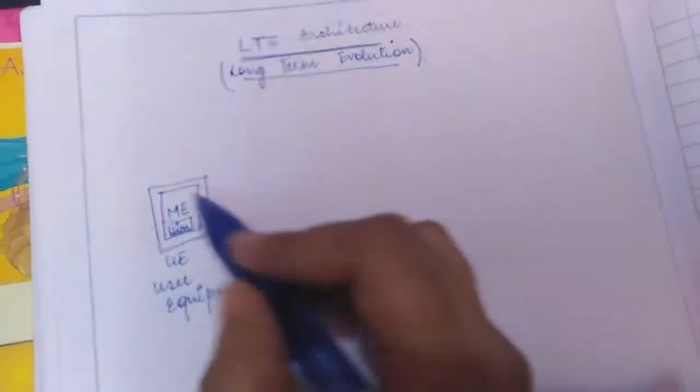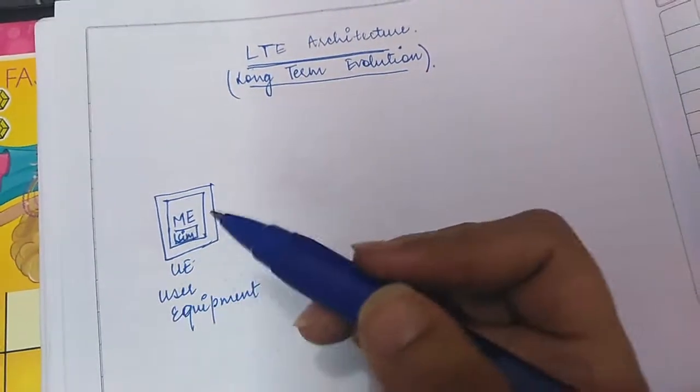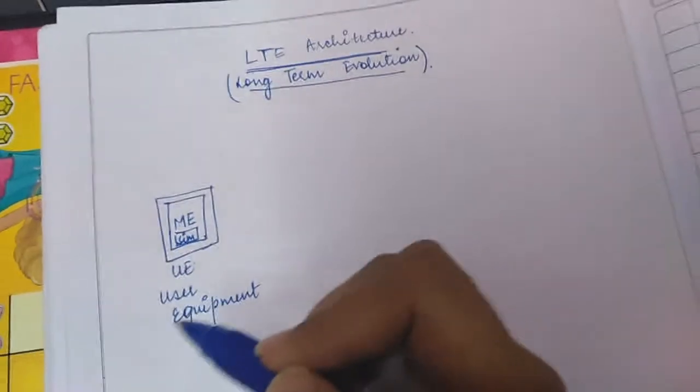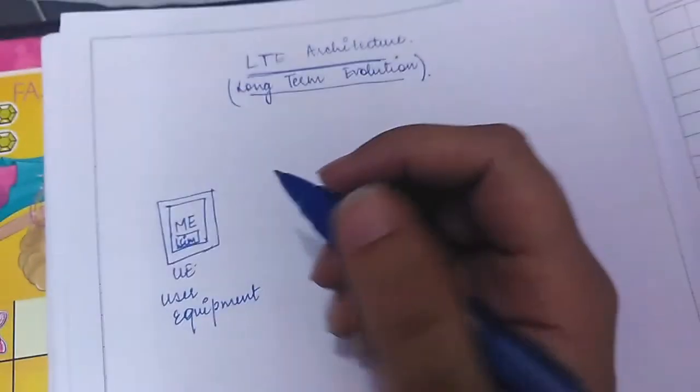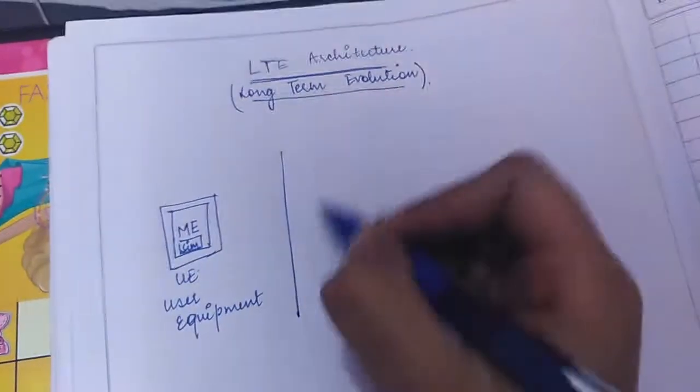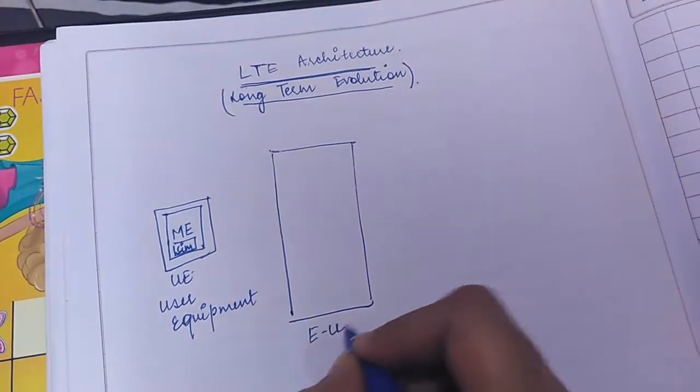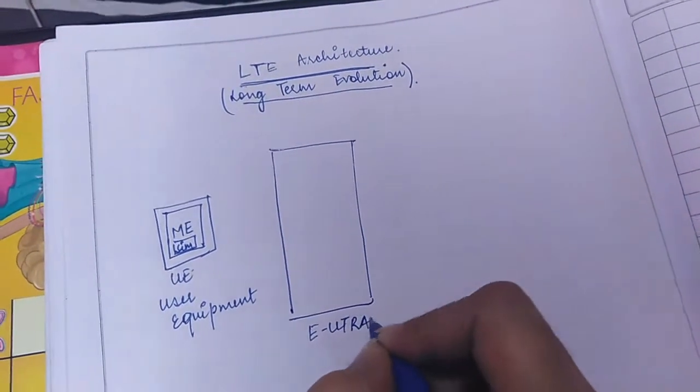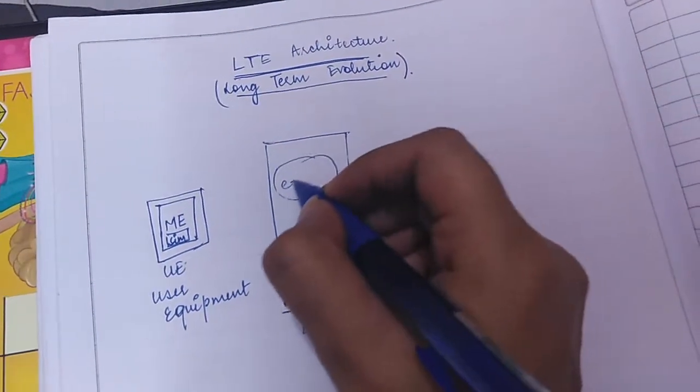These user equipment serve as a front end in order to start a communication within our LTE architecture. This UE is interacting with the EUTRAN that consists of several e node B.